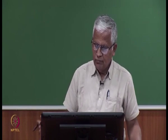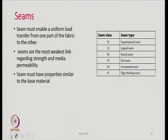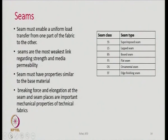When you bring two fabrics together and stitch them — how do you place them? That is what a seam is all about. There are different ways of placing these fabrics. The seam must have properties similar to the base material. Breaking force and elongation at the seam are important mechanical properties of technical fabrics. Whenever we are trying to sew fabrics, we are making perforations, and it is a source of weakness when the two fabrics are joined together.